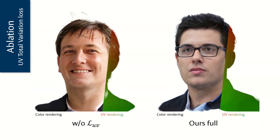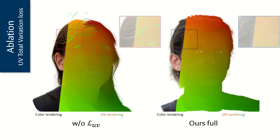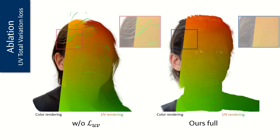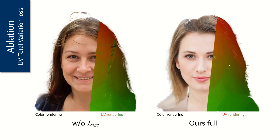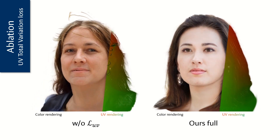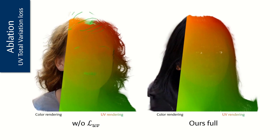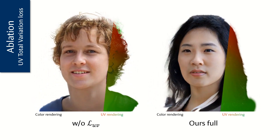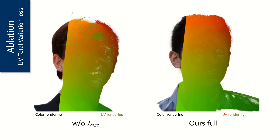Here, we ablate the effect of our novel UV total variation loss. Without this regularization, the generated images noticeably lose quality. Lines of Gaussians that mimic hair strands appear, and the color from the back of the head shines through. These artifacts become immediately visible when investigating the UV renderings, where each Gaussian is colored using its UV coordinate. Our novel UV total variation loss effectively removes both types of artifacts by enforcing the UV rendering to be smooth.